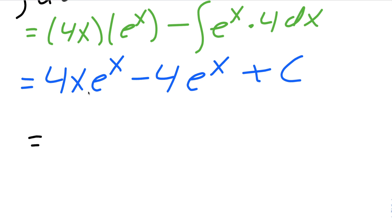Both of these pieces have an e raised to x, and both of these pieces are factors of 4, so you could say 4 e raised to x, parentheses x minus 1, close parentheses, plus c.